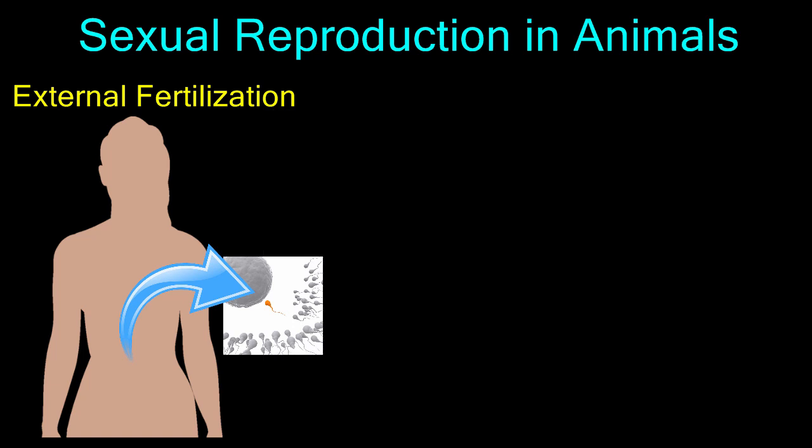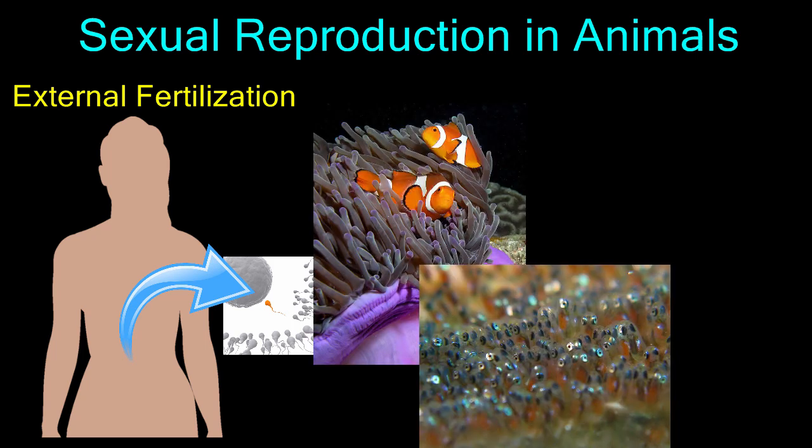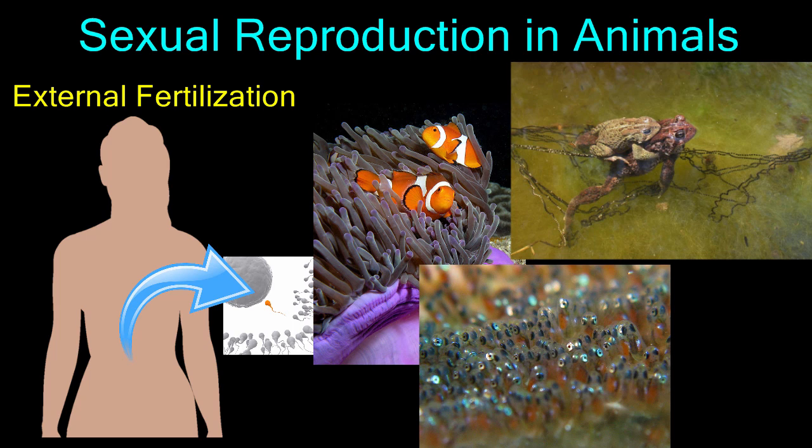External fertilization allows the egg and sperm to meet outside of the animal's body. Many fish and amphibians like frogs use external fertilization to reproduce. During external fertilization, the female lays her eggs in the water, then the male releases his sperm over the eggs. The sperm swim to the eggs and penetrate their outer membrane to fertilize them. Sometimes one or both parents will remain to guard the fertilized eggs. This pair of frogs may look like they are having sex, but actually the male is just hitching a ride on the female's back to ensure that his sperm are released over the eggs immediately.